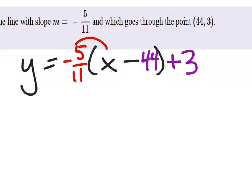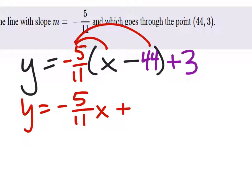Now we'll distribute the slope. So y equals negative 5 elevenths x plus, and over here we got negative 5 elevenths times 44, or negative 44 if you want.